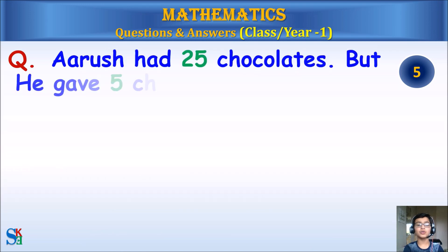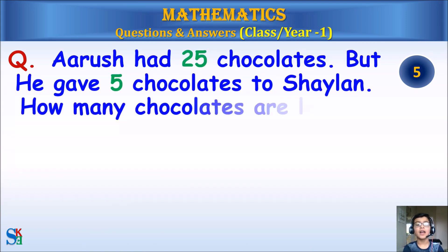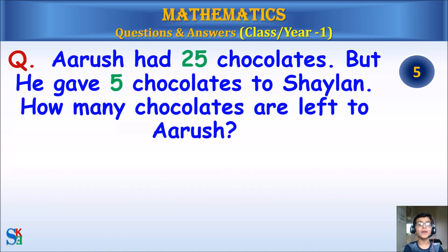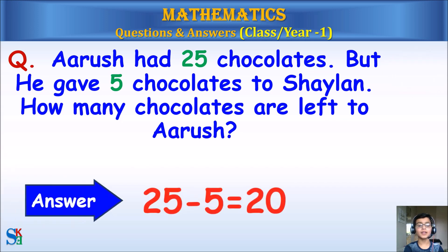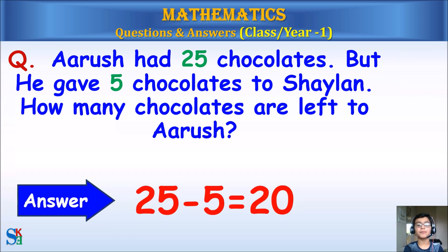Arush had 25 chocolates but he gave 5 chocolates to Shailan. How many chocolates are left for Arush? Answer: 25 minus 5 equals 20.